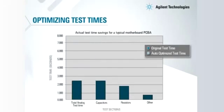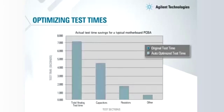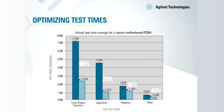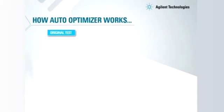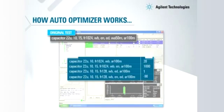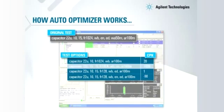On a typical motherboard PCBA, test times can be slashed by more than 50%. The auto optimizer also verifies test stability using statistical methods with data from your known good board.